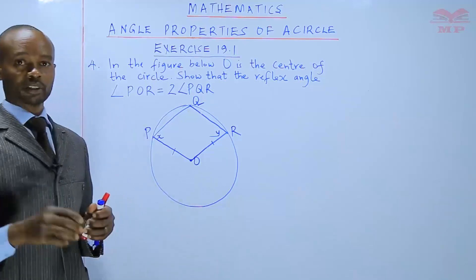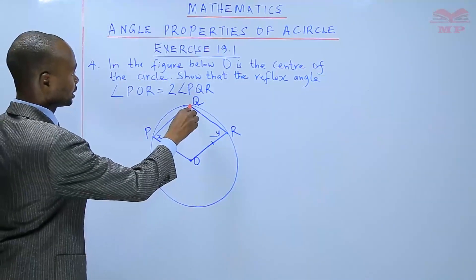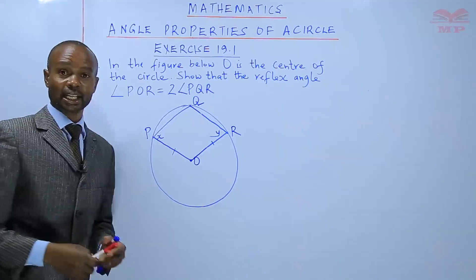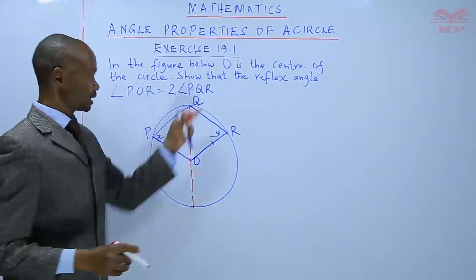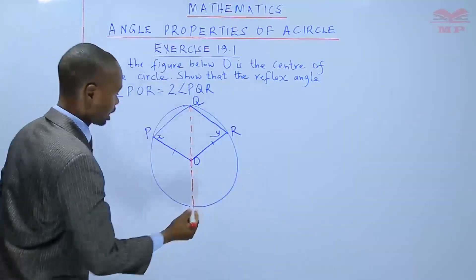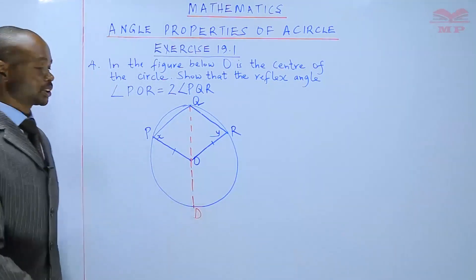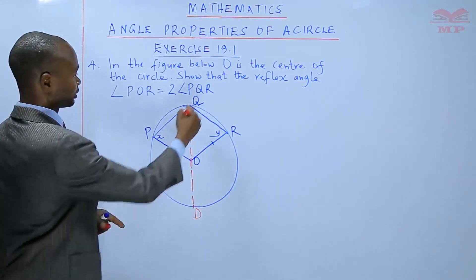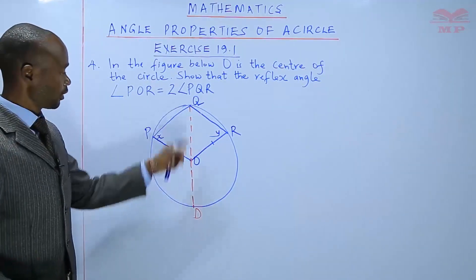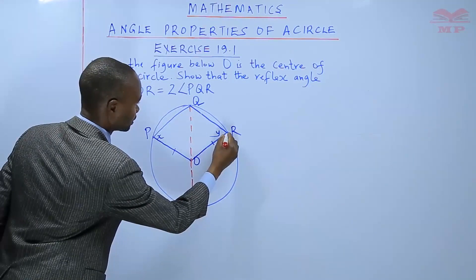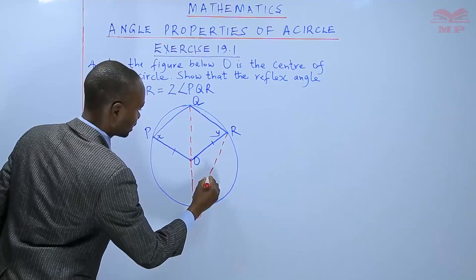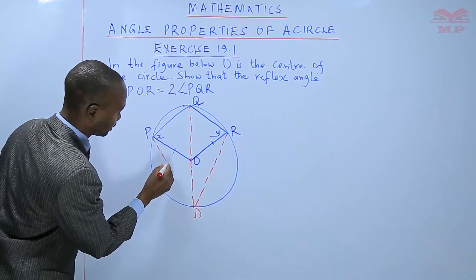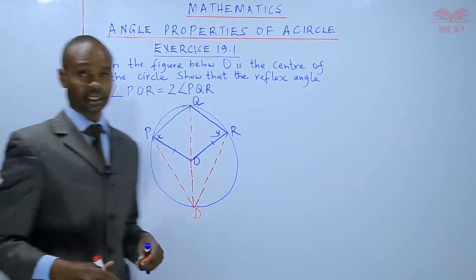One of the things we will do is introduce a chord running from Q right through O to the other edge of the circle — it will actually just be like the diameter. Where it touches the circle, I can give it a point D. After getting that, when I have that chord QD, I will introduce another line DR, and also introduce another line PD.